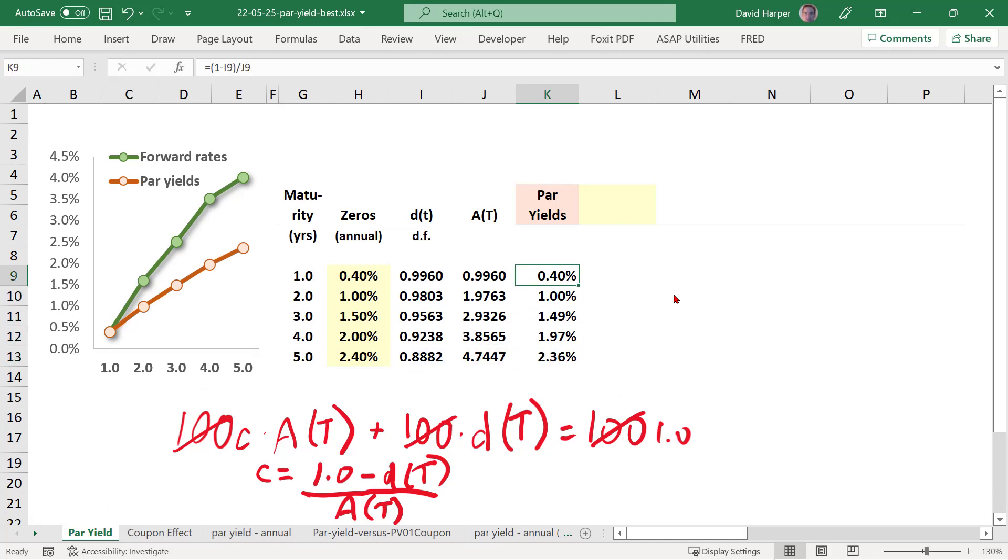And you hopefully noticed my par yield curve shows up upward sloping as expected. It's pretty close to the spot rate curve, but it is different. These are my par yields and I have one for each maturity. So let's focus on the five-year par yield. It's 2.36%. What does that mean? Well, let's test it.